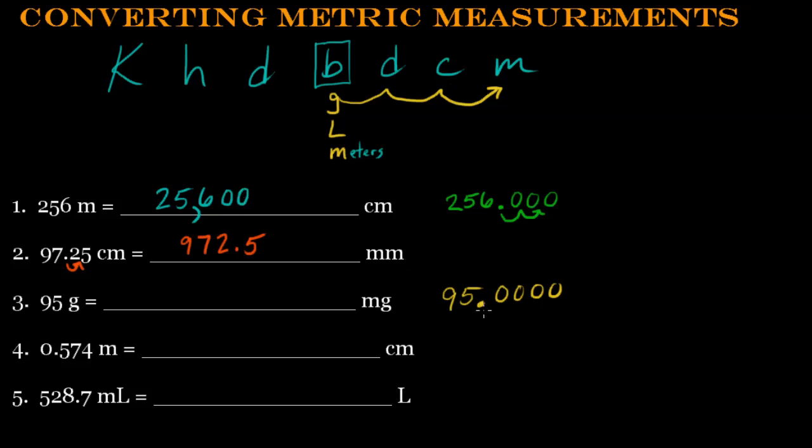So I start here, and I'm going to move it over one, two, three places. And that's my new number. So I'm going to rewrite that new number right here, 95,000. I could put .0 if I want to. You don't need to, but you could. And this is 95,000 milligrams.